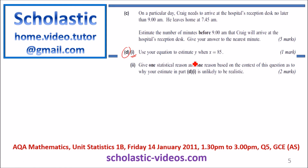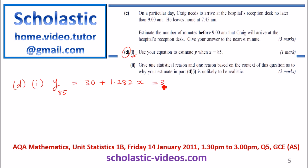Part D, Part 1: use your equation to identify Y when X equals 85. We find Y at X=85 using Y = 30 + 1.282 × 85, which gives us a value of 138.97 minutes.